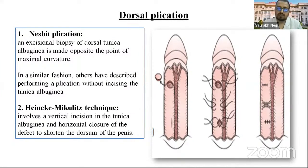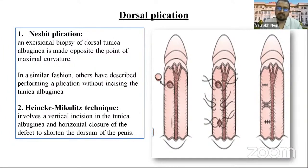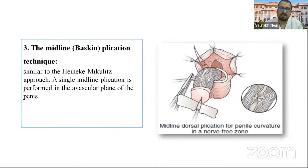Dorsal plication procedures include three types: Nesbit plication, Heineke-Mikulicz technique, and Baskin's procedure. In Nesbit plication, an elliptical biopsy of dorsal tunica albuginea is made opposite to the maximal curvature and closed in horizontal fashion. In the Heineke-Mikulicz technique, it involves a vertical incision of the tunica albuginea and horizontal closure of the defect. In Baskin's plication technique, similar to Heineke-Mikulicz, a single midline plication is performed in the avascular plane of the penis.